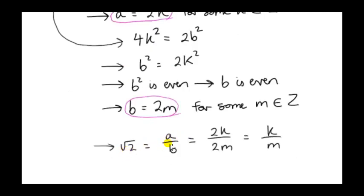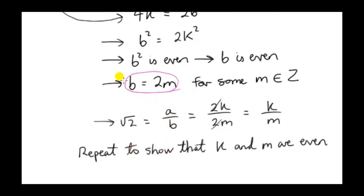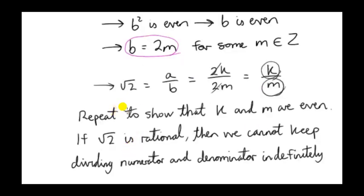That means we can write root 2 as 2k over 2m. The 2's cancel, and now we've simplified root 2 down to k over m. So initially, this fraction must not have been simplified to its lowest terms, because we've discovered that both a and b are even. We can imagine repeating this process and we will end up showing that both k and m are even, so both k and m can be divided by 2. You can see that we've run into a problem — if root 2 is a rational number that can be written as the ratio of two integers, we cannot keep dividing the numerator and denominator by 2 indefinitely. Eventually we're going to come to a fraction in its lowest terms, but yet our proof is telling us that we can.